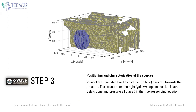Step 3 is about positioning and characterization of the sources. In the figure, we have a view of the simulated bowl transducer, in blue, directed towards the prostate. The structure on the right depicts the skin layer, pelvic bone, and prostate, all placed in their corresponding location. The frequency, phase, and amplitude of the source signal can be controlled.